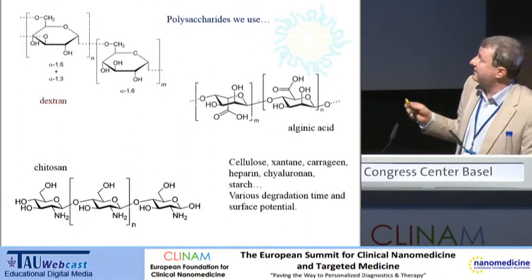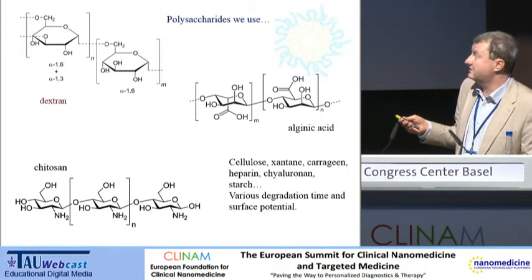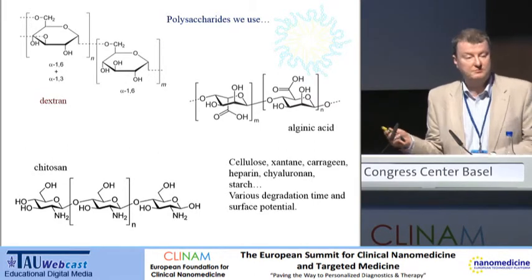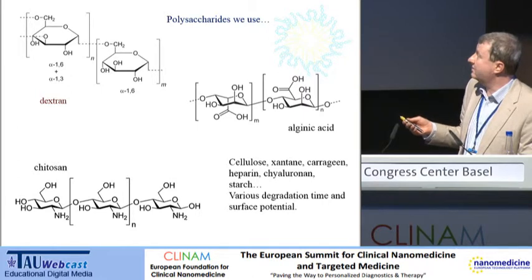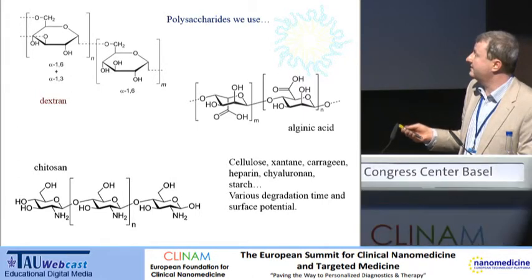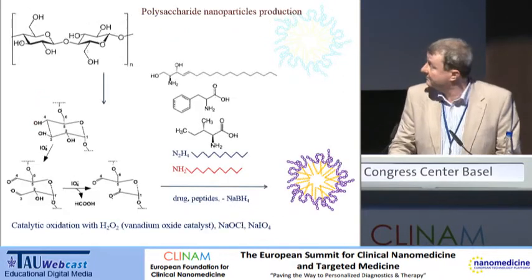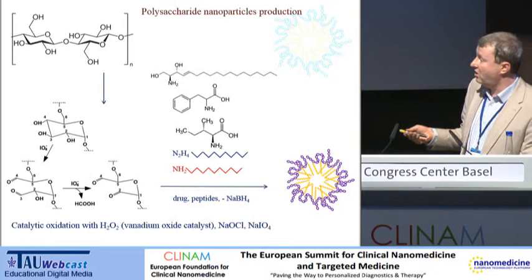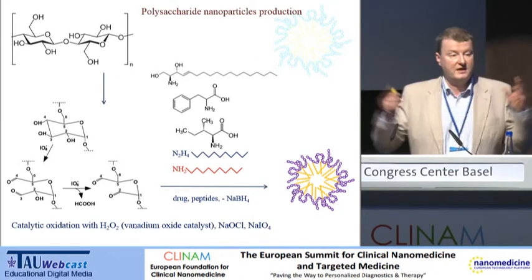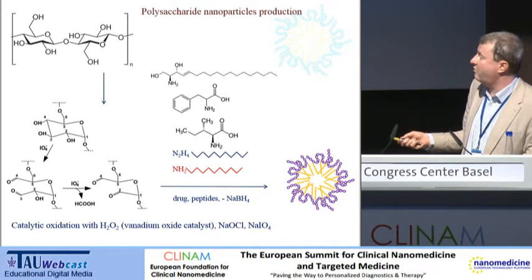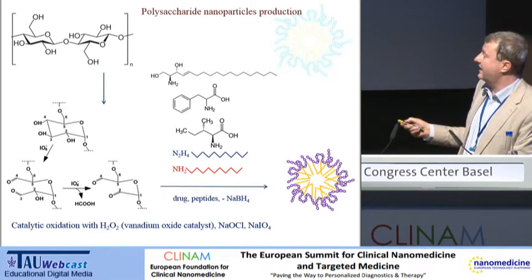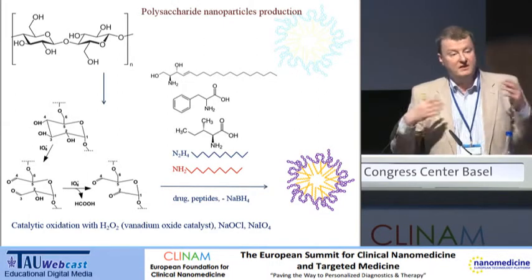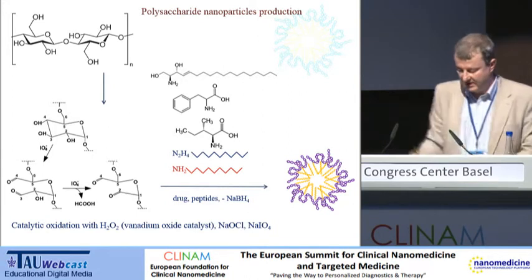How do we do it? First, we take polysaccharides. We use different polysaccharides. We started to work with Dextran because it is medically approved and you can buy it in very well-defined batches. But of course, we are also making nanoparticles from alginic acid, cellulose, xanthan, heparin, and chitosan. In the first step, we oxidize the glucose rings without breaking the polysaccharide backbone, so we have opened and very active aldehyde groups along the polysaccharide chain. Then we can attach aliphatic amines, amino acids, or even sphingoamines that bring lipophilic side groups to the hydrophilic long chain of the polysaccharide.